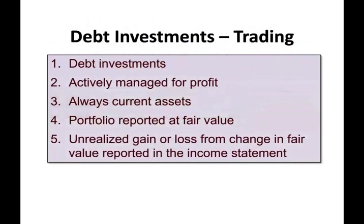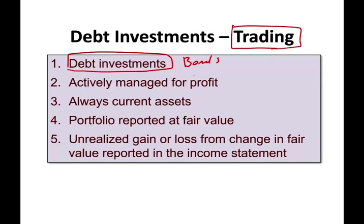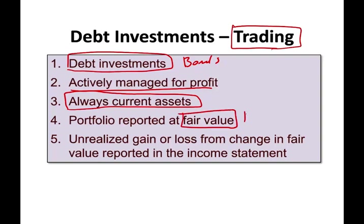The second category is trading. That means you bought the bond but plan to sell it in the near future. Trading securities are debt investments that are actively managed for profit — you're buying and selling on a regular basis. It is always a current asset because your intent is to sell in the near future. The portfolio is reported at fair value, meaning when securities go up or down, at period-end you report those unrealized gains or losses on the income statement.